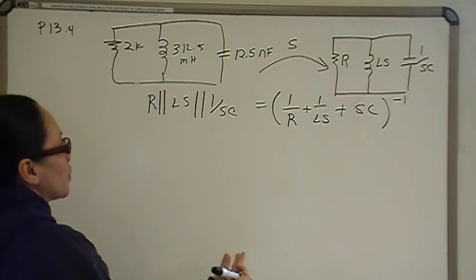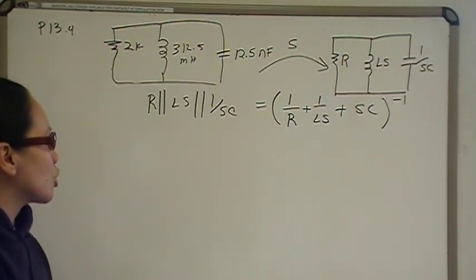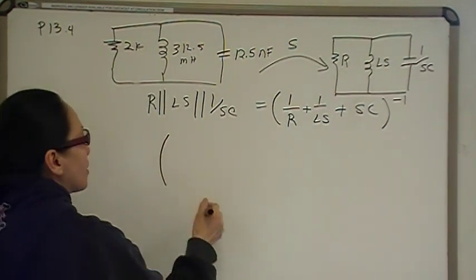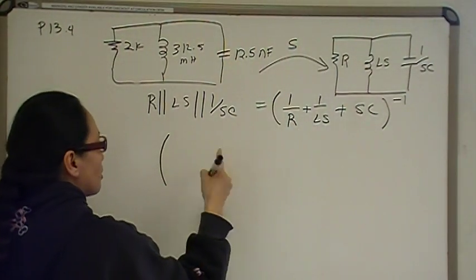So, now, before we take the inverse, we're going to combine everything. So, that means going back to basic algebra, we need to find a common denominator. And that common denominator is going to be RLS. So, everything needs to be over RLS.